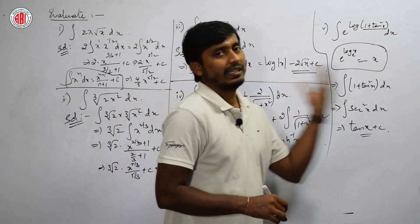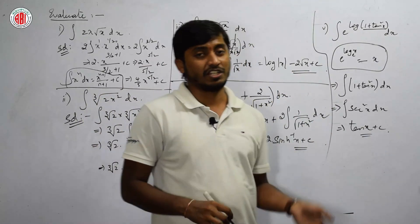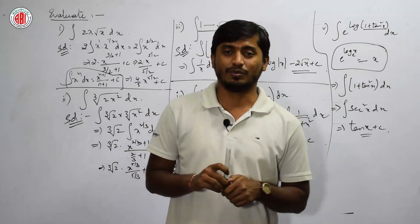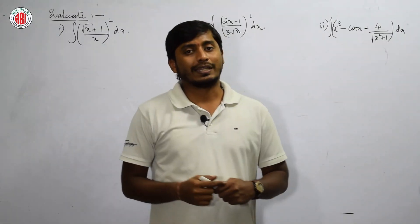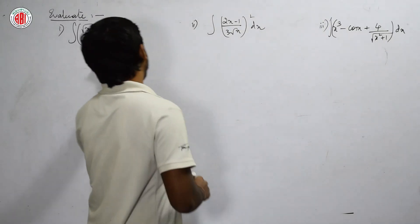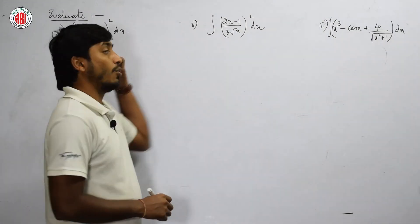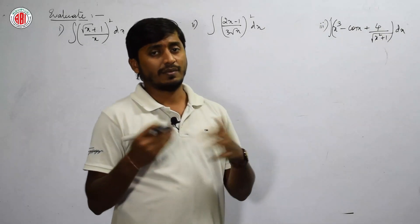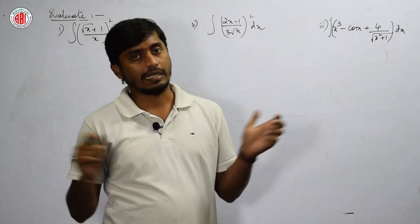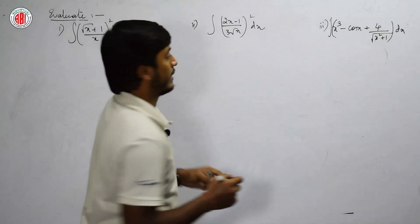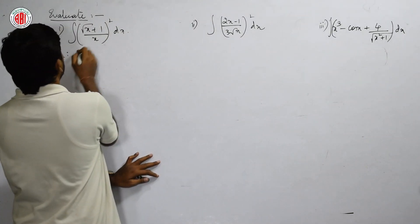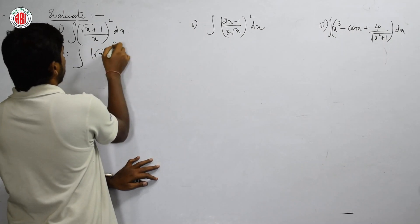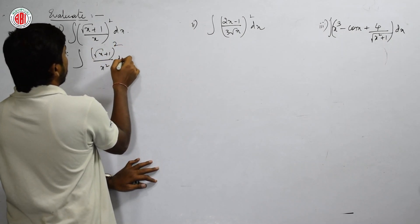We just increase the level of simplification to convert into the standard form of integral. Next question: evaluate ∫(√x + 1/x)² dx. Let us simplify by expanding the numerator and then apply integration. That will be ∫(√x + 1/x)² dx.